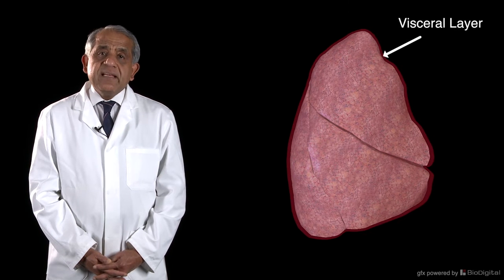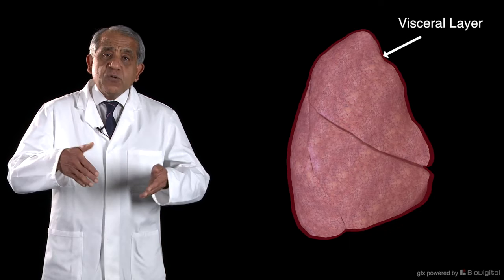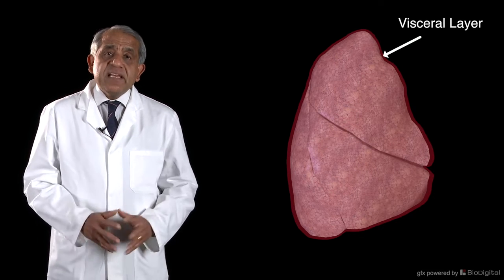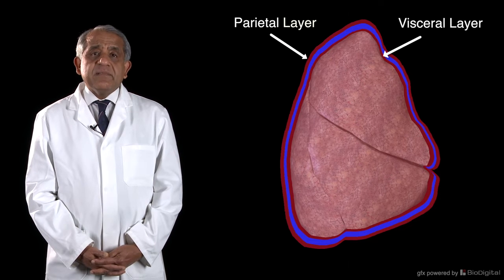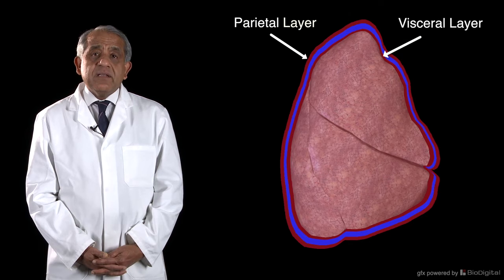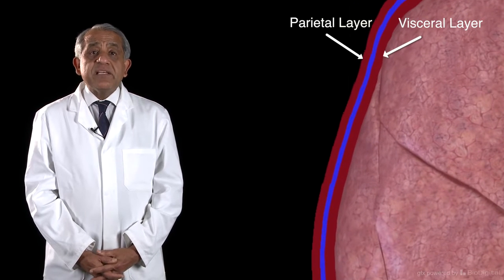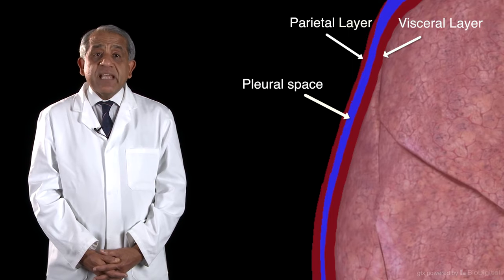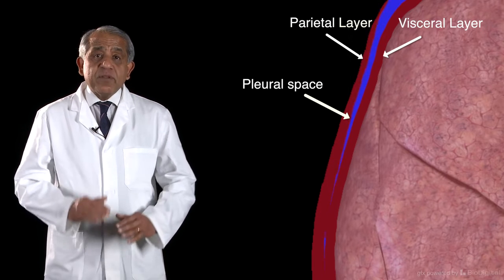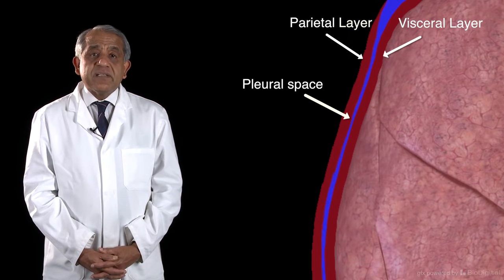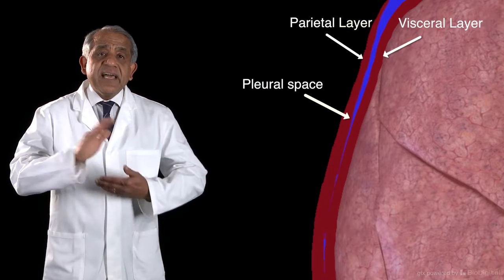Each lung is contained within a fairly delicate double-layered protective sac, and this is the pleural sac. The two layers of the pleural sac are actually continuous with each other around the hilum of the lung. The inner layer of the pleural sac is called the visceral layer and it lines the surface of the lung, entering and lining all the crevices in the lung. The outer layer is called the parietal layer and it is attached to the inner surface of the chest wall, and medially it is related to the fibrous pericardium. Between the visceral layer and the parietal layer is the pleural space or pleural cavity, which normally contains nothing more than a film of fluid that acts as a lubricant to allow the visceral surface of the pleura to glide against the parietal layer.